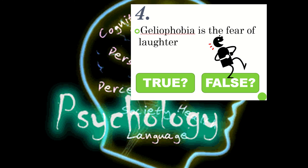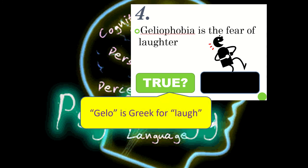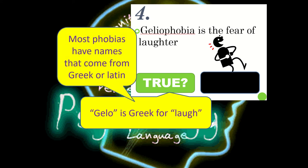Statement 4: geliophobia is the fear of laughter — true or false? This is true. According to psychology, you can have a fear or phobia of any stimulus, and that would include people laughing. The word geliophobia comes from 'gilo', which is Greek for laugh. Most phobias do have a name which originates from Greek or Latin.